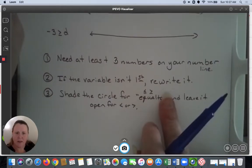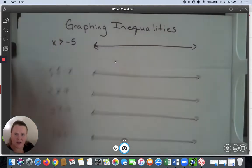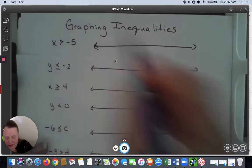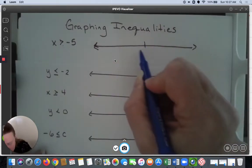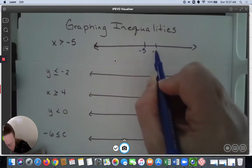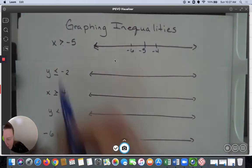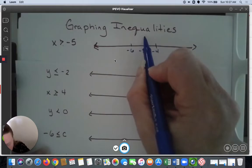If we keep those things in mind, let's graph the following problems. This is x > -5. I'm going to put -5, -4, and -6 on my number line, and because it's greater than, I'm going to put my circle above it.